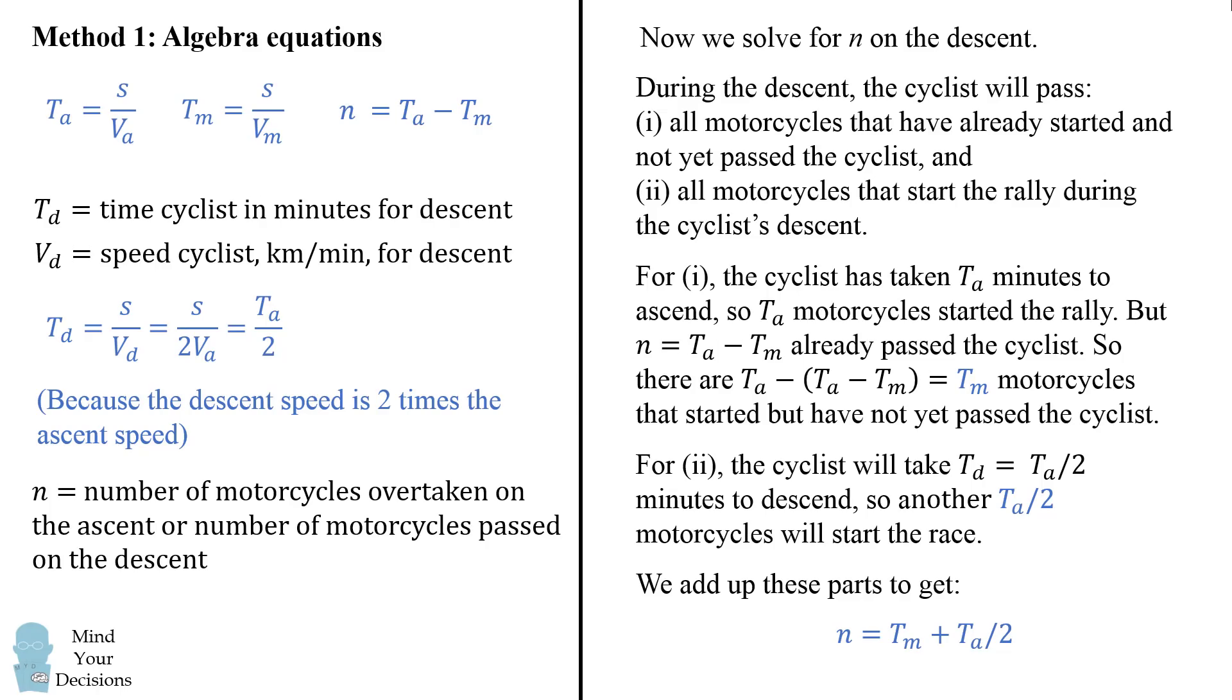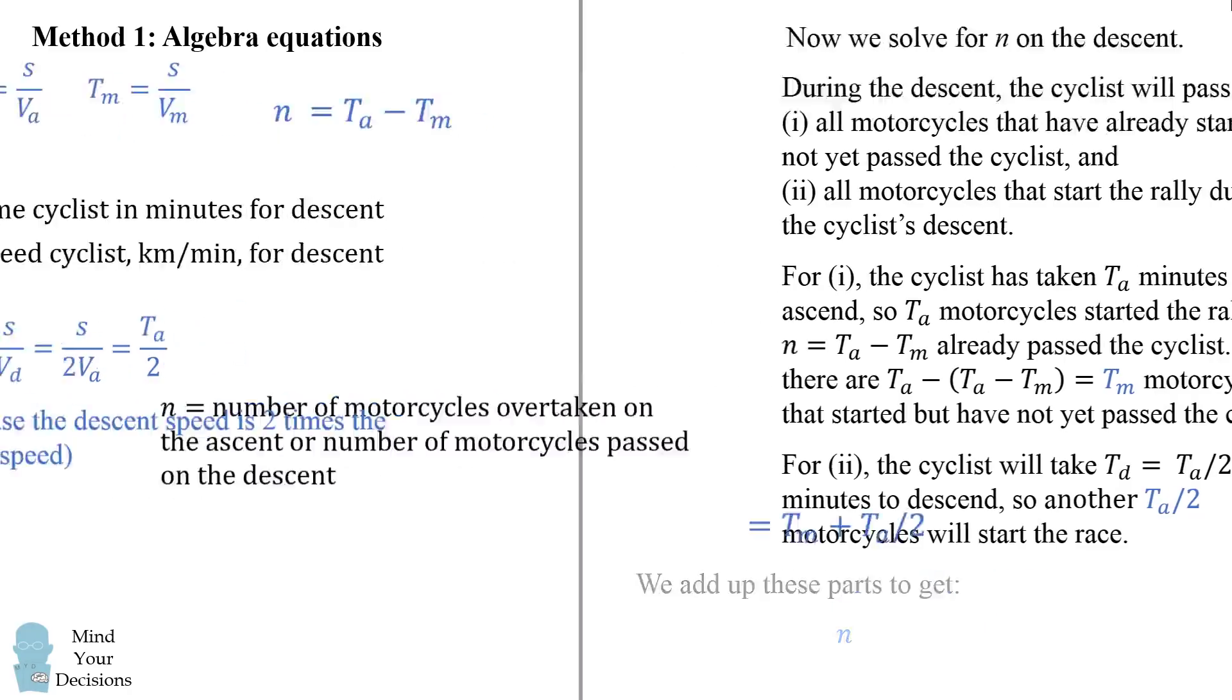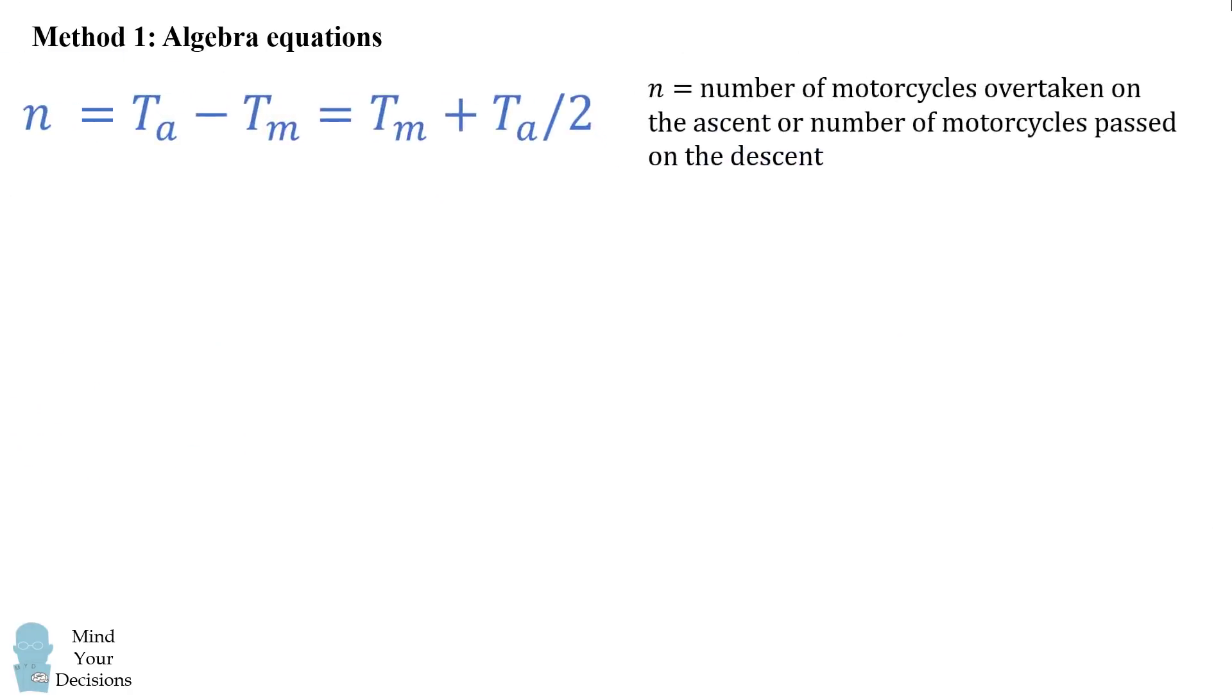So we now have two different expressions for n and we need to set them equal to each other. So let's go ahead and do that. We can now solve this equation for tm in terms of ta. We get that tm is equal to ta divided by 4.